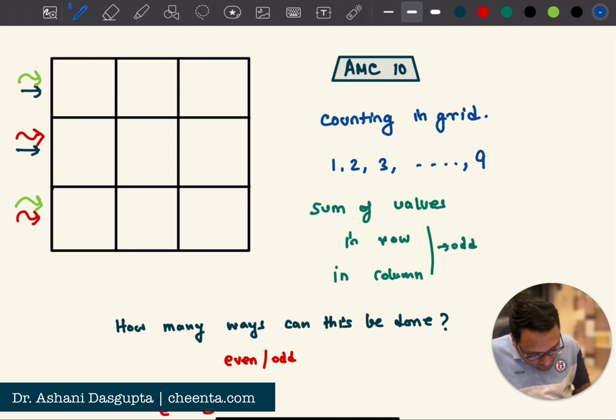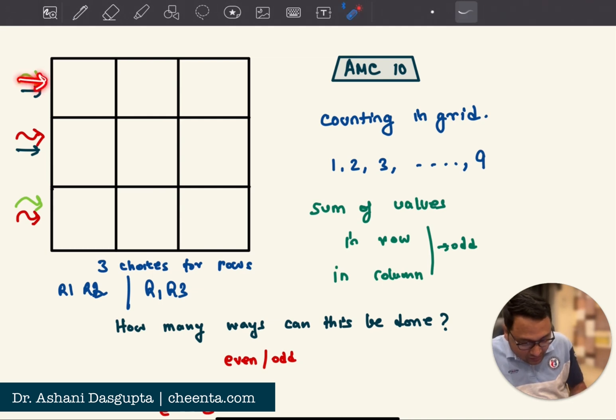So there are three choices for rows. And let me write those choices. It's either row one, row two. So the first two rows, you just put the evens in the first two rows. Or, it is row one, row three. So you choose the first and the third row. Or, it's row two, row three. You choose the second and the third.